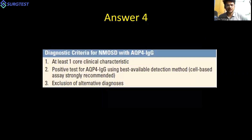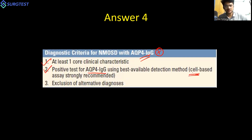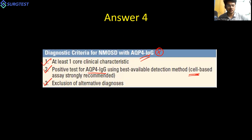For a patient who is seropositive for aquaporin-4 IgG antibodies, any one core clinical characteristic is sufficient — it could be a diencephalic syndrome, symptomatic cerebral syndrome, or area postrema syndrome. The positive testing must be done by cell-based assay and there must be exclusion of alternative diagnoses. Diagnosing seropositive NMOSD is therefore much simpler: one core clinical characteristic, exclusion of alternatives, and a positive cell-based assay.